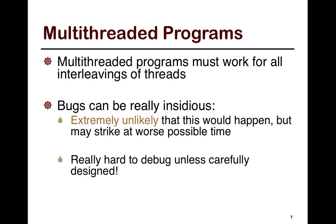Based on every run of the program and the input, a program could essentially be doing different things. That's bad because normally in a single-threaded program it always does the same thing — feed it the same input and it does the exact same thing again. But with a multi-threaded program, even if you give it the same input, it could behave differently — randomly and unpredictably, like the toss of a coin.